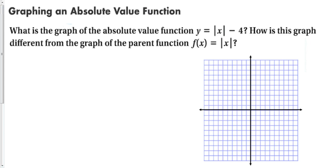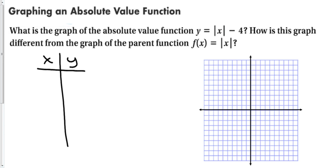Let's graph a basic absolute value function. The question is: what is the graph of y = |x| − 4, and how is it different from the parent function? Let's start by making a table. We want both sides of the absolute value function, so we pick positive and negative numbers: −3, −2, −1, 0, 1, 2, and 3.